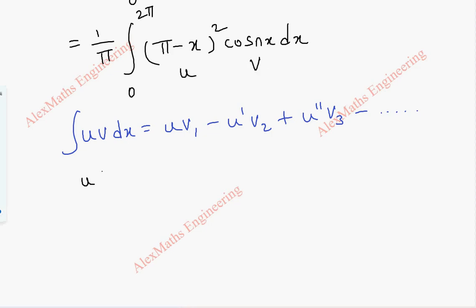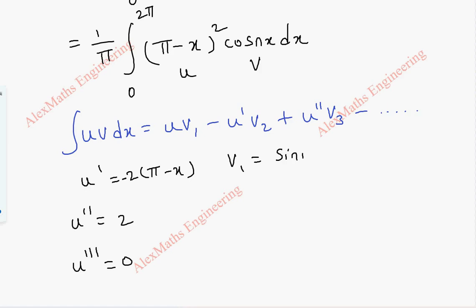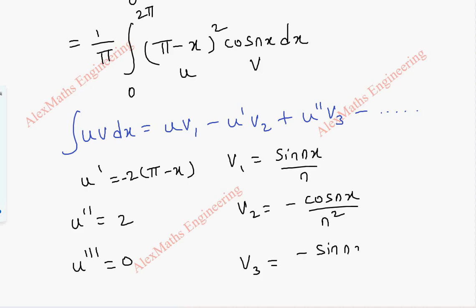From u = (π − x)², u' = 2(π − x)(−1), so we get a minus sign. u'' = −2 × (−1) = 2. u''' = 0. For the successive integrals: v₁ = sin(nx)/n; v₂ = −cos(nx)/n²; v₃ = −sin(nx)/n³.